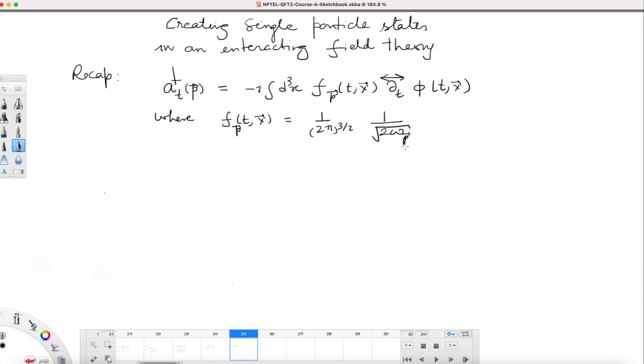Where f is defined as following: some factors. Remember this ω_p, when you write it, ω_p² = p² + m_p², where m_p is the physical mass, not the mass parameter in the theory, but the physical mass of the particles which you will get in this theory. This was the definition.